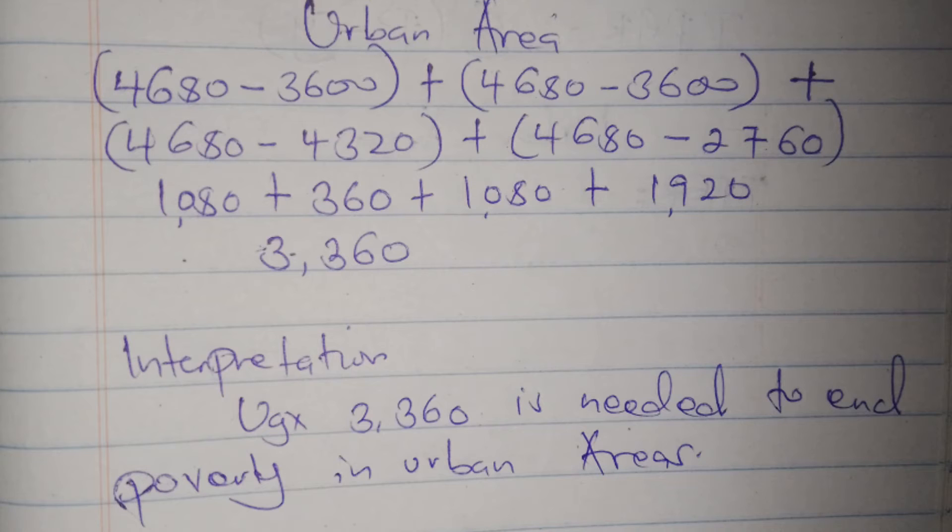We do not consider individuals that live above the poverty line. In the urban area we had four people that were living below the poverty line, so we substitute. The first one is 4680 minus 3600, even the second one 4680 minus 3600 like that.